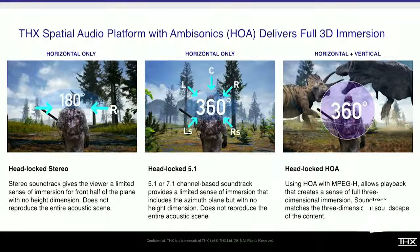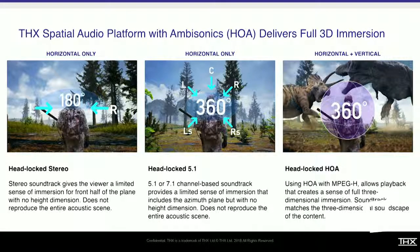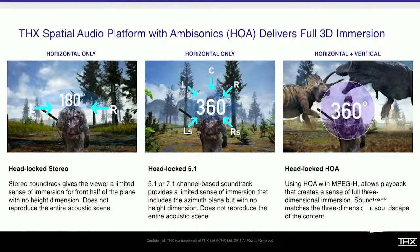A bit about what we're doing in spatial audio. There are three different concepts. You have headlocked stereo, which is just stereo — we don't hear in stereo. You have headlocked 5.1, which is another format for spatial audio over headphones. And headlocked HOA, where HOA is a representation of a sphere. It has several advantages over traditional channel-based audio, which is the 5.1 scenario.